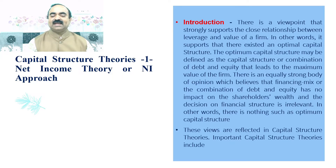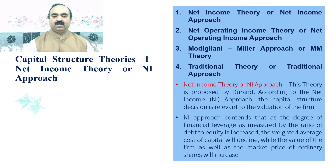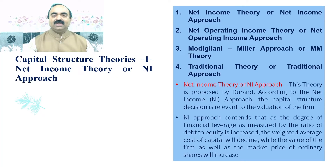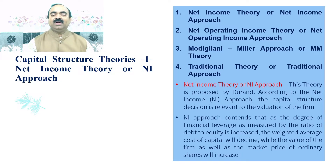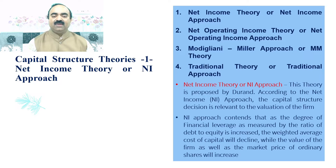Important capital structure theories include: one, net income theory or net income approach; two, net operating income theory or net operating income approach; three, Modigliani-Miller approach or MM theory; and four, traditional theory or traditional approach.